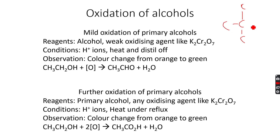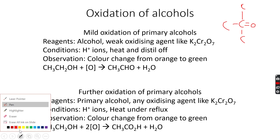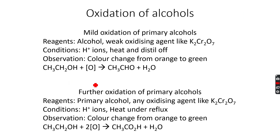The reason tertiary alcohols cannot get oxidized: if I make the backbone structure of a tertiary alcohol, you can see that the alpha carbon atom is attached to one, two, and three carbon atoms. If I try to oxidize this, I'll be forming a double bond and removing a hydrogen — but this is not possible because the alpha carbon atom cannot form five bonds. A carbon atom can only form four bonds because it has four valence electrons. Therefore, tertiary alcohols do not get oxidized.